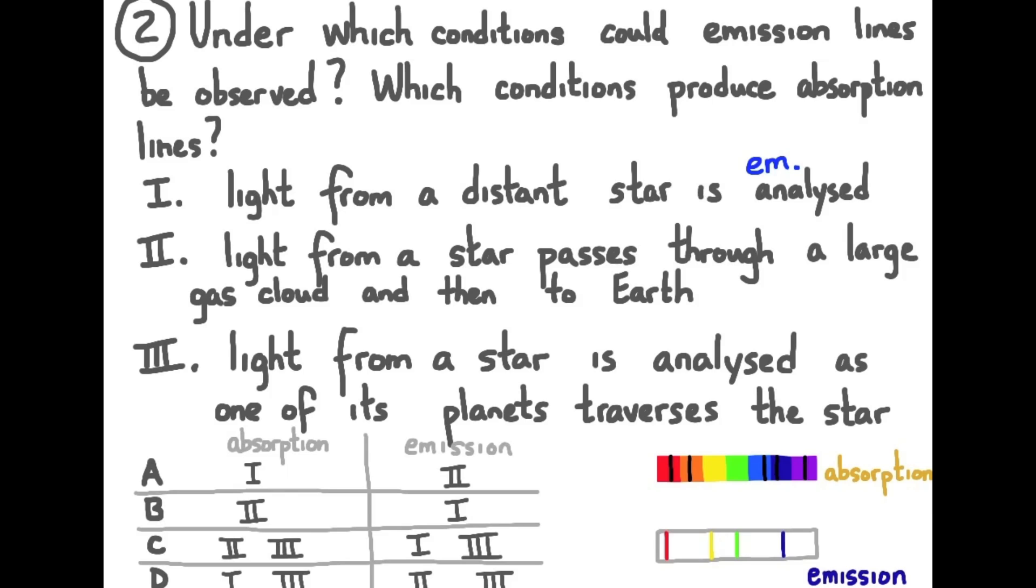For condition number two, as light travels through the gas cloud, certain frequencies are going to be absorbed by the atoms, the electrons of the atoms, and re-emitted in all different directions.